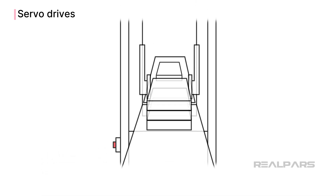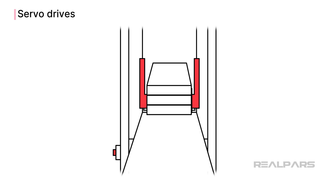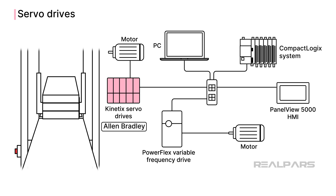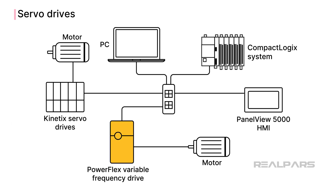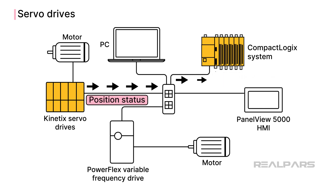In this application, the lifting arm has to move to a precise position to lift the stack of trays from the conveyor belt. For this positioning application, an Allen-Bradley Kinetix servo drive is used. Just like PowerFlex variable frequency drives, Kinetix servo drives are designed to integrate easily into CompactLogix systems over an EtherNet/IP network. When the PLC wants to move the lifting arm, it sends a position command to the servo drive and the servo drive moves the arm to the correct position. The drive sends the PLC back information about its status and current position, so that the PLC knows when the arm is in position.